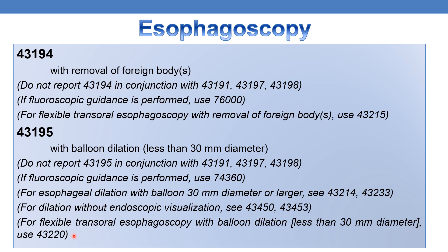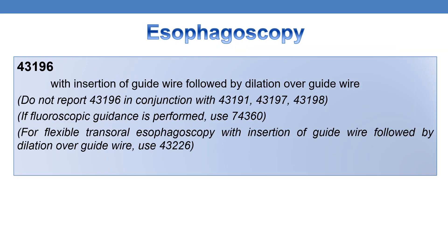For flexible transoral esophagoscopy with balloon dilation less than 30 mm diameter, use CPT 43220. CPT 43196 deals with esophagoscopy, rigid, transoral, with insertion of guide wire followed by dilation over guide wire.